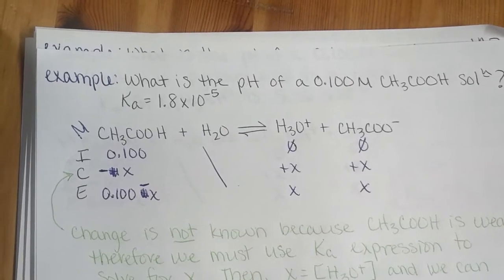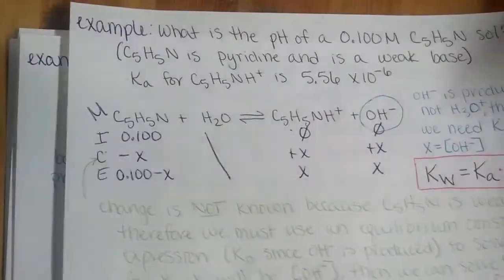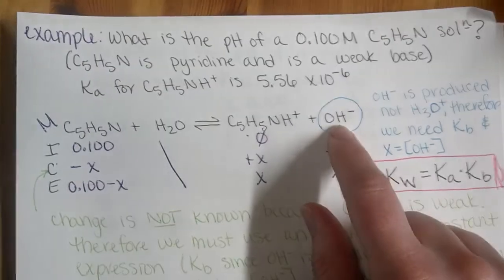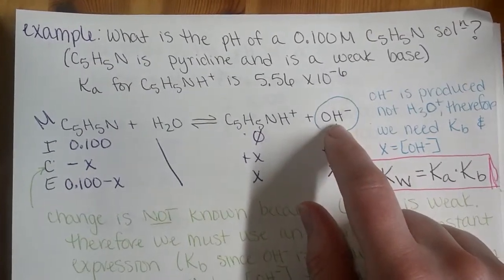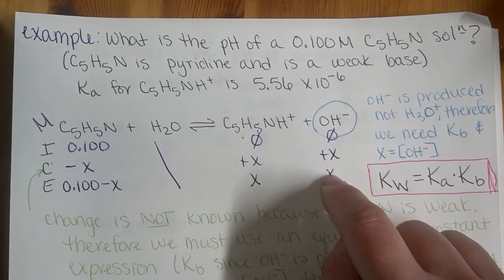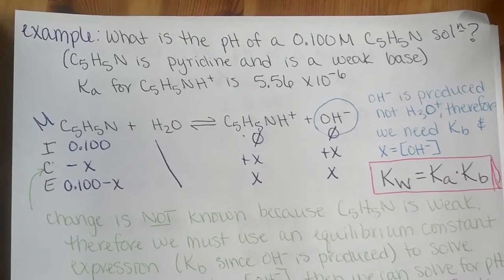H3O+ is our goal to get to, but when we're looking at any bases, we're going to be producing hydroxide ions. So it just means that we have one more step after we solve for our X value, is we need to go from POH to pH.